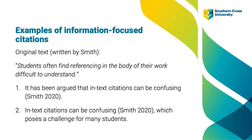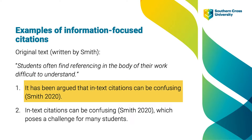So let's look at some examples. Here again is the original text by the author Smith. In the first example, the citation appears right at the end of the sentence. The paraphrase comes first: It has been argued that in-text citations can be confusing, and then at the very end we have the author and year contained in round brackets, followed by a full stop. It's important to note that there is no comma between the author and the year — just a space.